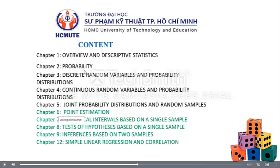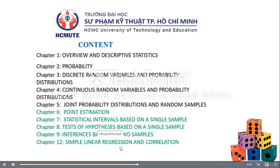Chapter 2 is Probability. Chapter 3 is Discrete Random Variables — 'variables' means biến, 'random' means ngẫu nhiên, 'discrete' means rời rạc. Chapter 4 is Continuous Random Variables — 'continuous' means liên tục, so this covers continuous variables. Chapter 5 is Joint Probability Distribution, which is additional reading. Chapters 6 and 7 are about Estimation. Chapters 8 and 9 are about the Test (hypothesis testing). And Chapter 12 is about Regression.